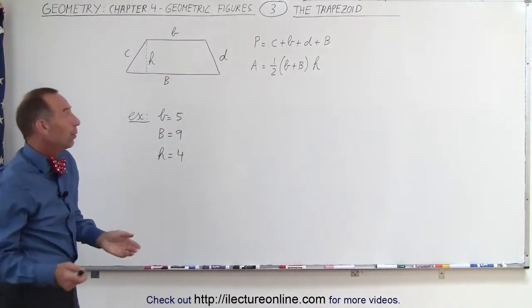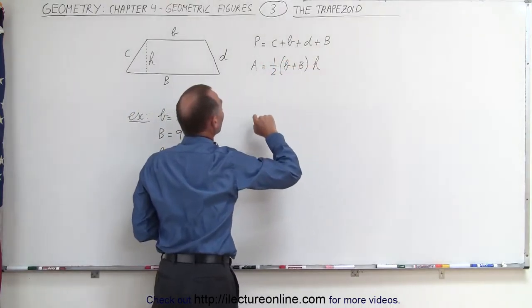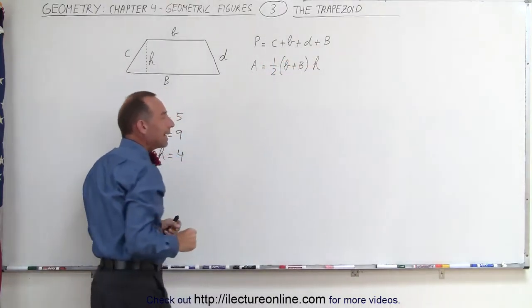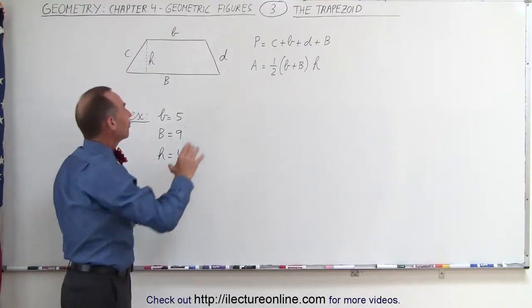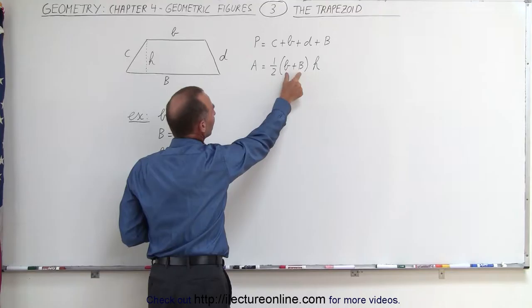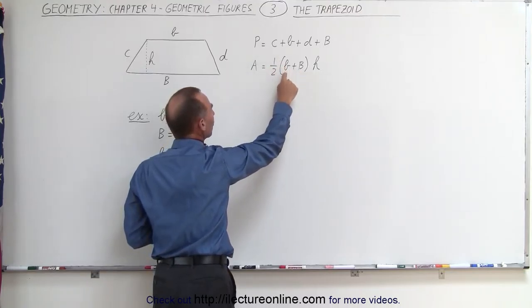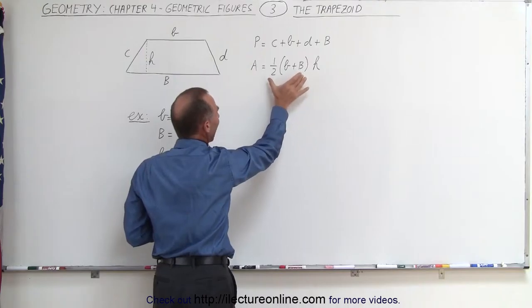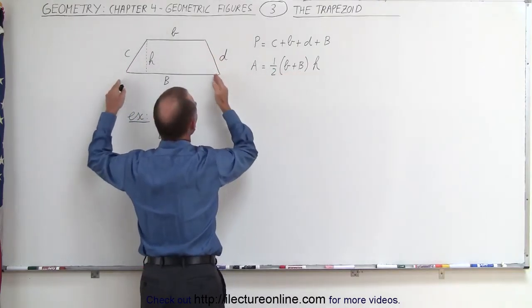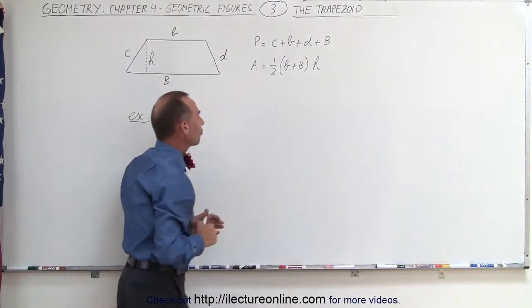To find the perimeter, we simply sum up all four of the sides. To find the area, we take the average length of the two sides that are parallel to one another. That's done by summing them together and dividing that by two. So one half times the sum of small b plus big B—that's the average length of these two sides—and we multiply that times the height. That gives us the area of the trapezoid.